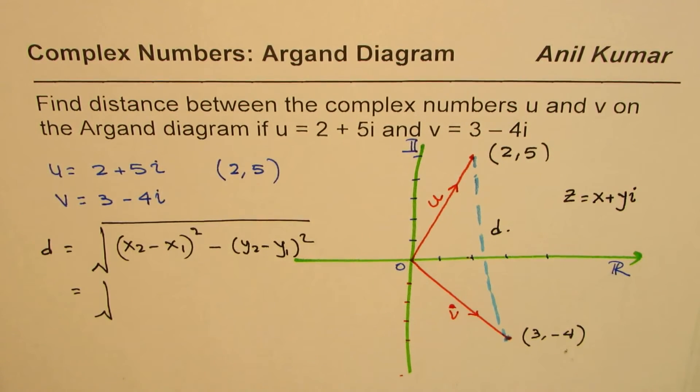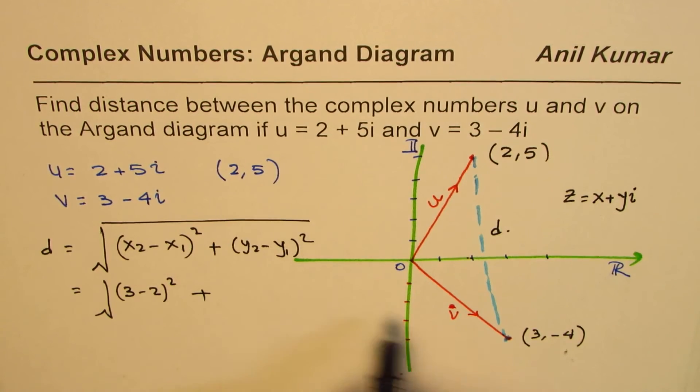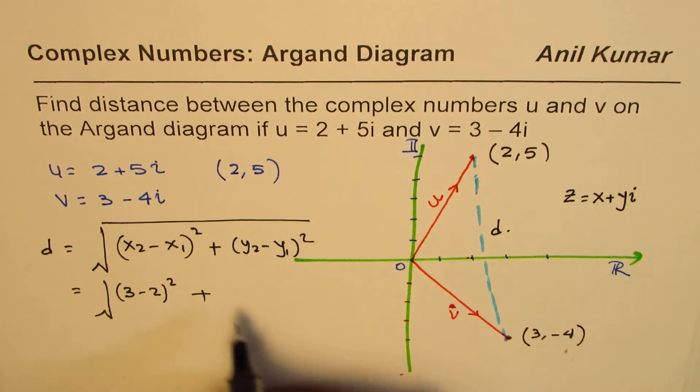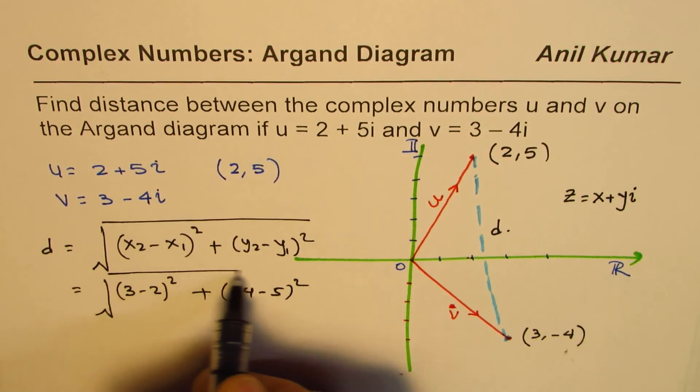So it is x2 minus x1, so it is 3 minus 2 whole square, plus y2 minus y1, minus 4 minus 5 whole square. So that is what it is.